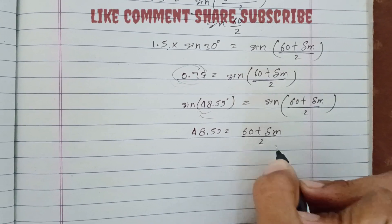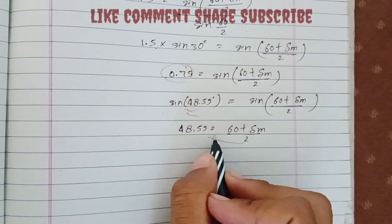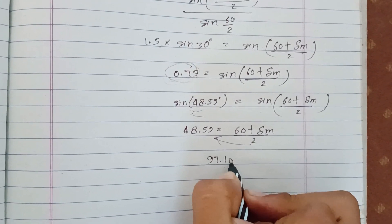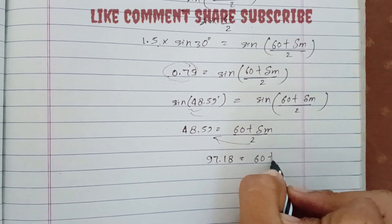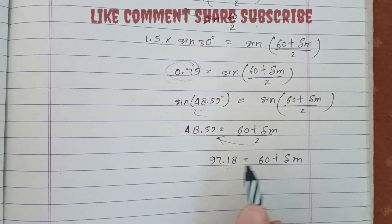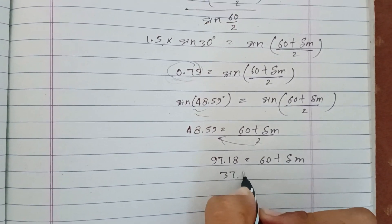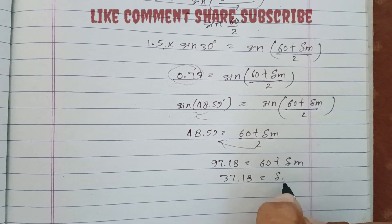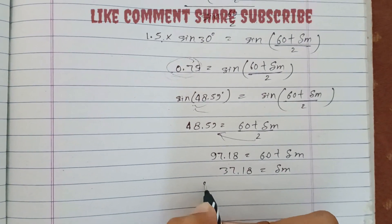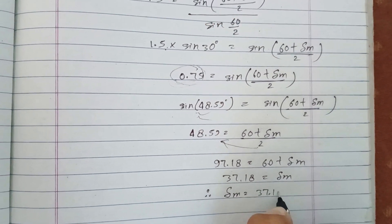Multiplying by 2, we get 97.18 = 60 + δm. Subtracting 60 from both sides: 37.18 = δm. Therefore δm = 37.18 degrees.